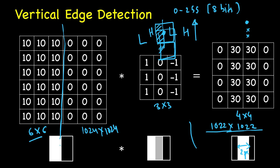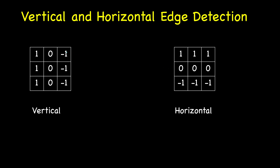You can now guess the filter for detecting horizontal edges. Simply rotate the vertical edge filter by 90 degrees. If high values are on one side and low on the other, the output will be ±30, and taking the absolute value gives you the edge. So for horizontal edges, the filter is just the vertical filter rotated 90 degrees.